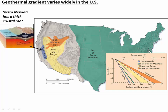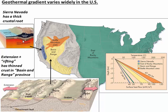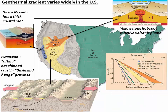The Sierra Nevada is a big thick crustal root — a mountain range where the crust is really thick — so the heat gradient is pretty low. Under the basin and range, this is an area of crustal extension or rifting where the crust is thinning and the mantle is coming up closer to produce those higher thermal gradients. This area — Battle Mountain — is actually the track of the Yellowstone hotspot.